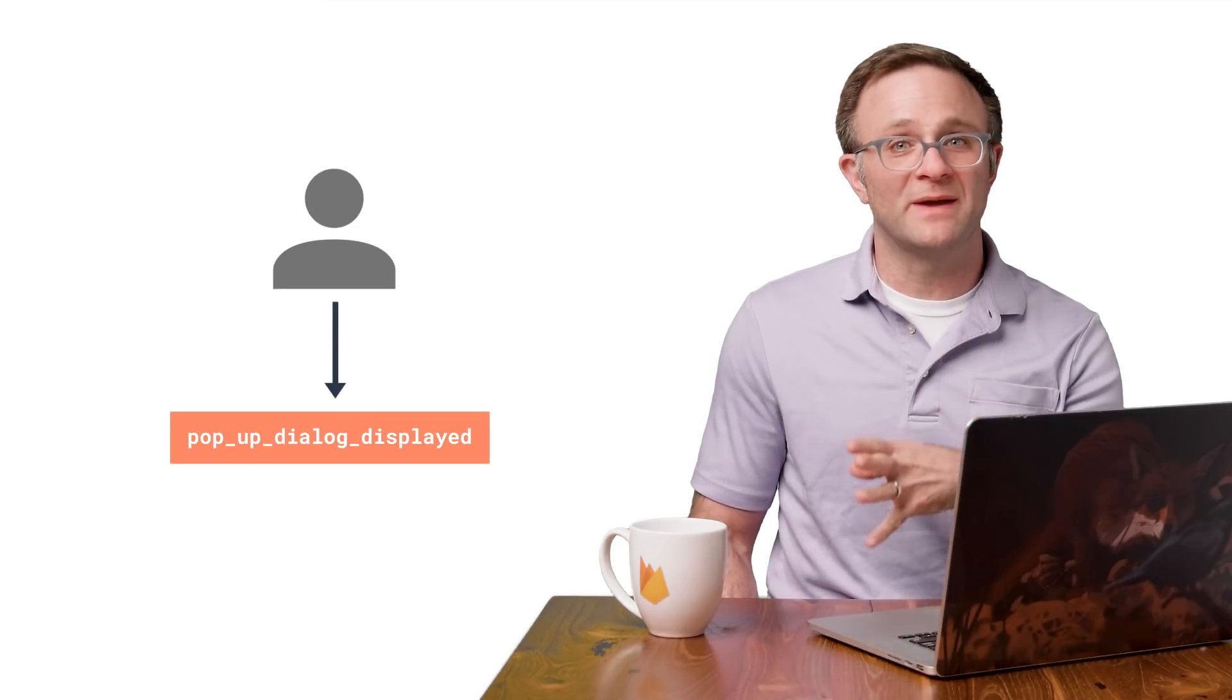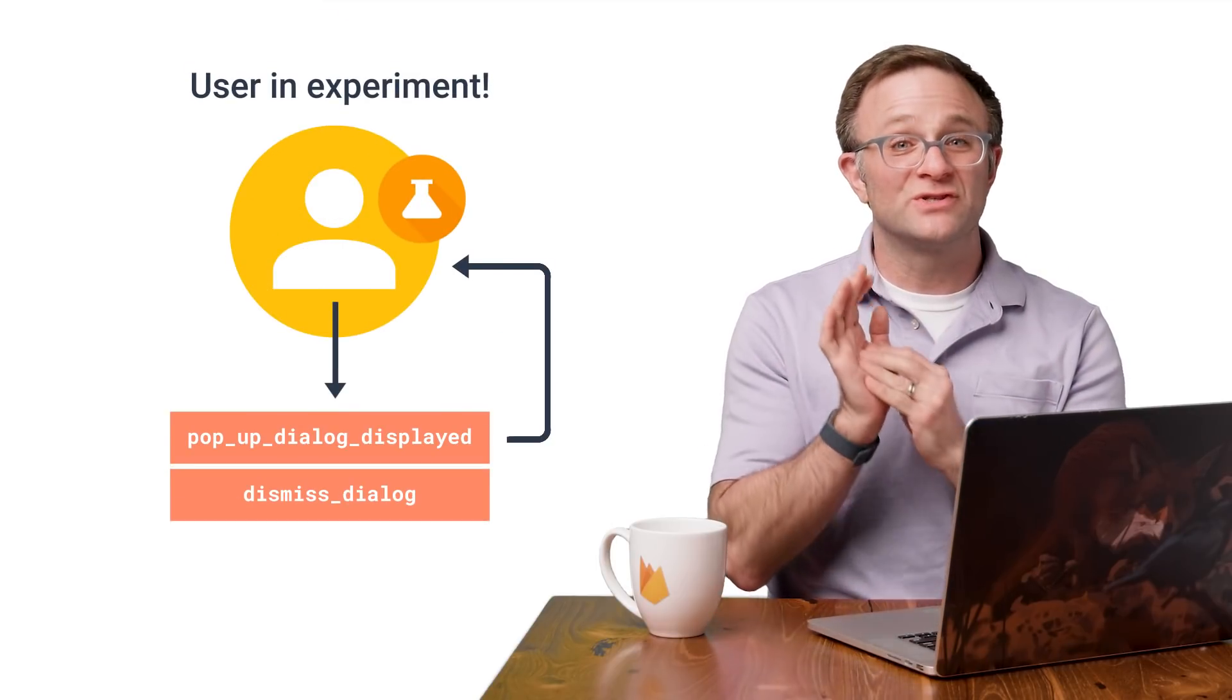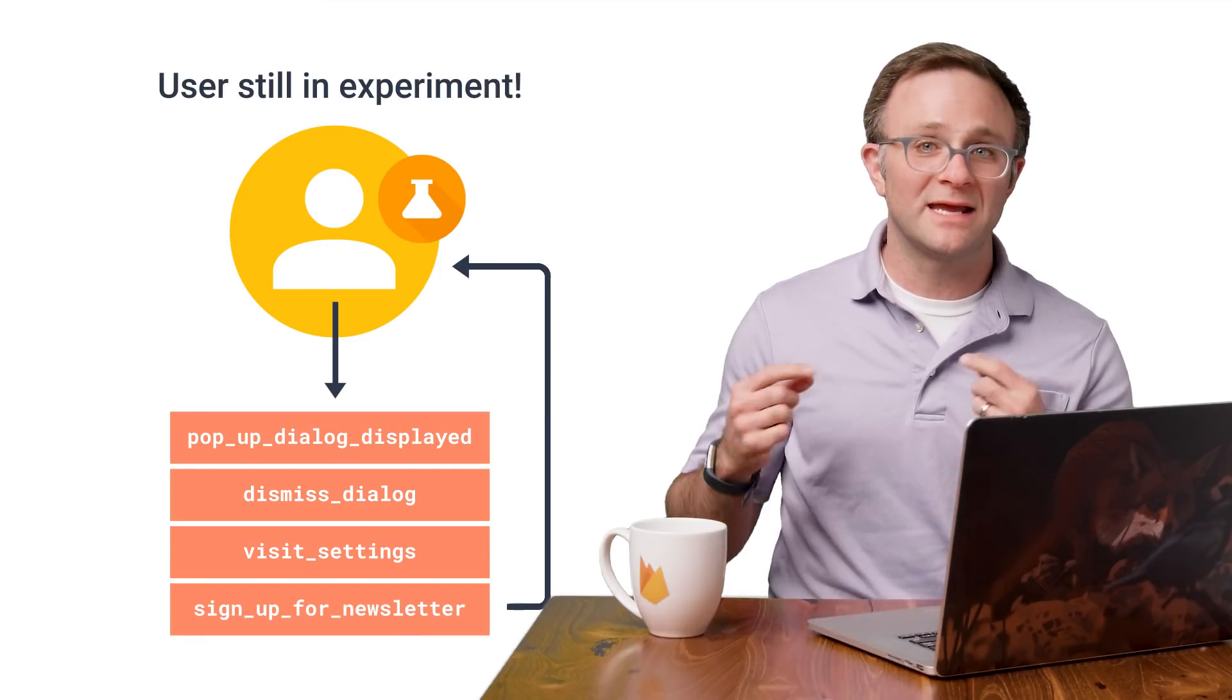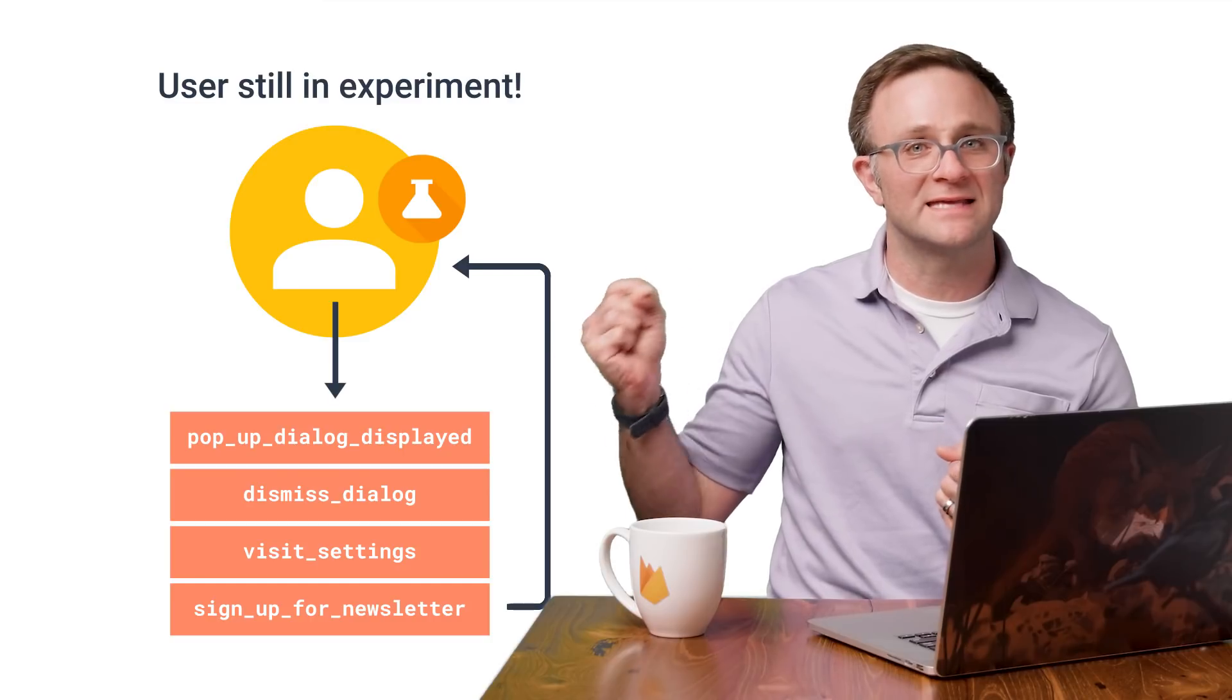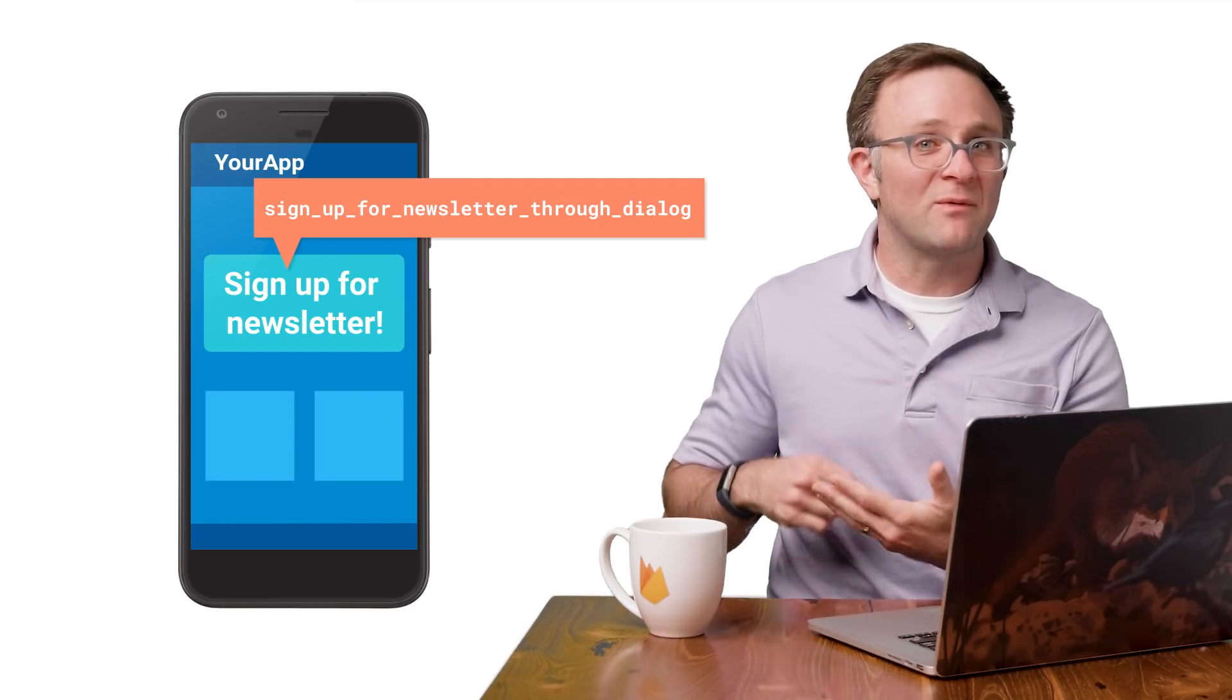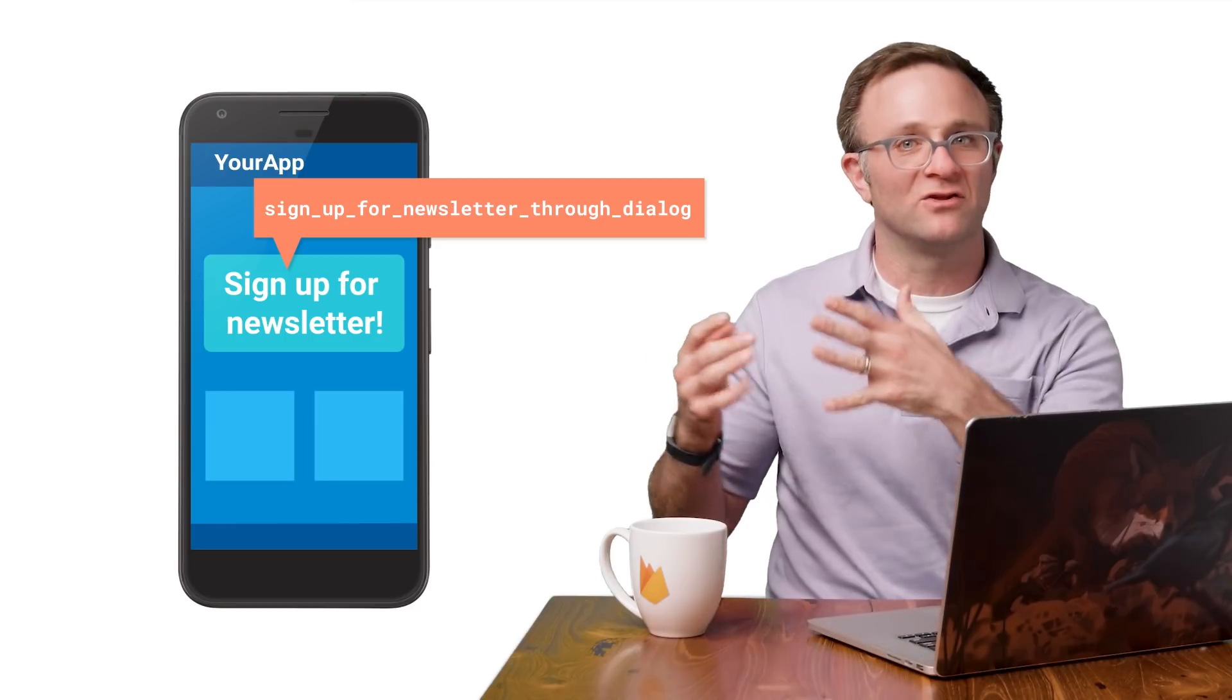Now, does this mean that my experiment is only going to measure whether users have signed up through this pop-up dialogue? Unfortunately, not quite. If my user dismisses the pop-up dialogue and then later signs up through the settings page, they'll still be included in my experiment because they'll have encountered this activation event earlier. Now, granted, this will still help a bit. Like, if we have users who never encountered this dialogue, they'll never be included in our experiment, and that does help eliminate some of our noise. But don't expect this to be like a perfect filter. If I really just wanted to focus only on users who signed up through this pop-up dialogue, I might want to record a completely separate signed up for newsletter through dialogue event and look to optimize that.